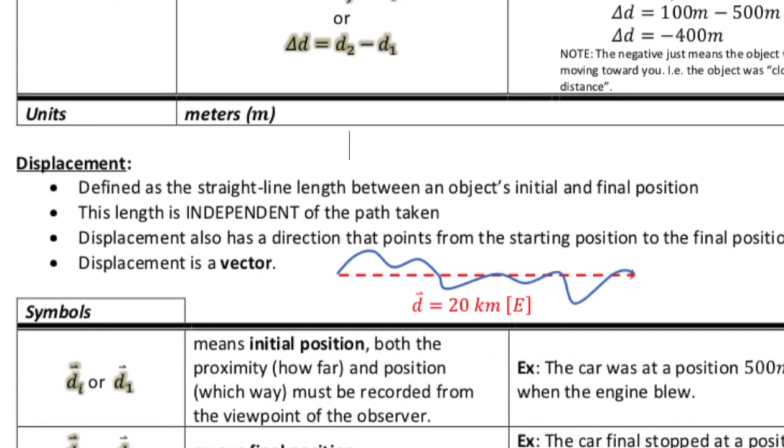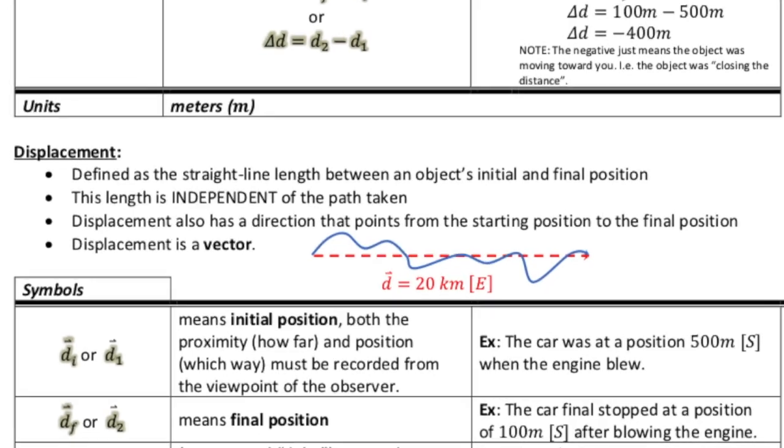Now here we go. This is where things get a little bit different. Now we're talking about the concept of displacement. Now displacement and distance are very different. Because the displacement is defined as the straight line length between an object's initial and final position. So in other words, we don't really take the path in consideration.